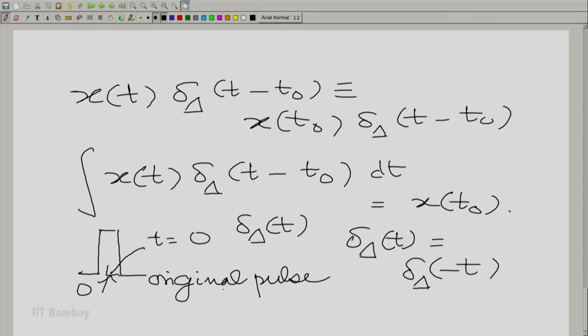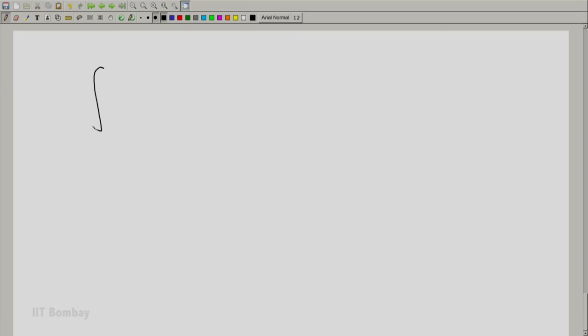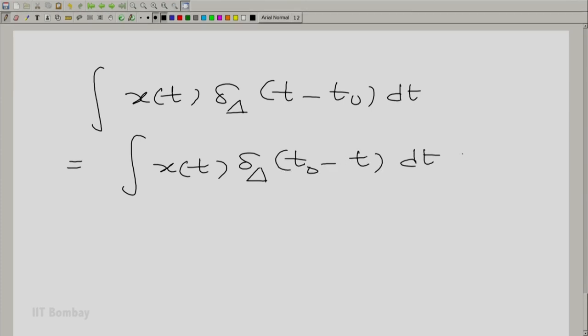Let us use this property. Let us use this property to write down a slightly modified equation. The slightly modified equation is integral x t delta delta t minus t0 dt is the same as x t delta delta delta t0 minus t dt. And this becomes equal to x of t0.